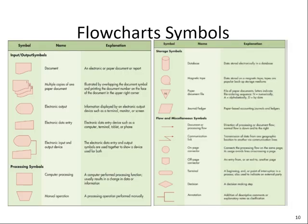We do have commonly accepted symbols for document flowcharts. Here we show some of those frequently used symbols. For example, we have a symbol for a document, and for multiple documents. We have symbols for process — the rectangle is for computer processing, and the trapezoid is for manual process.